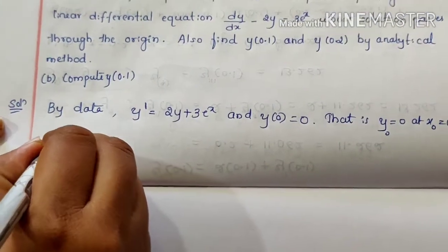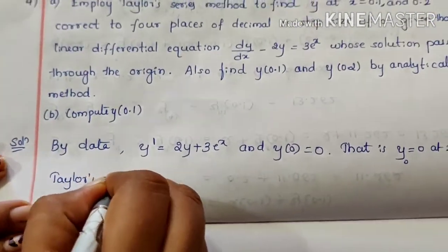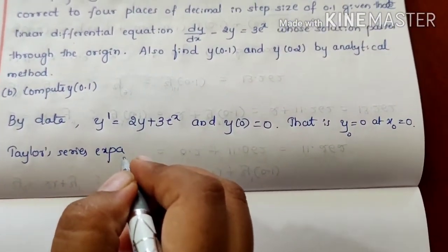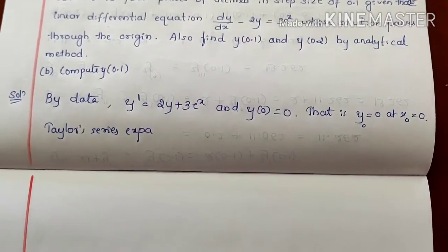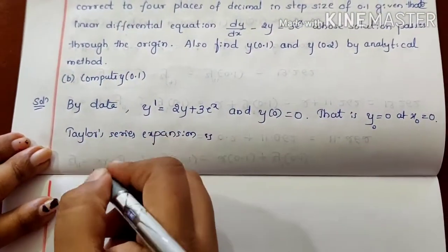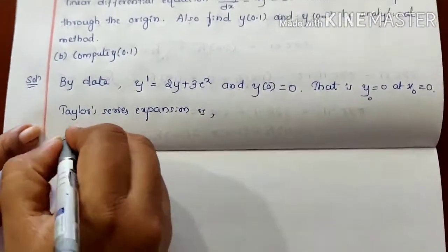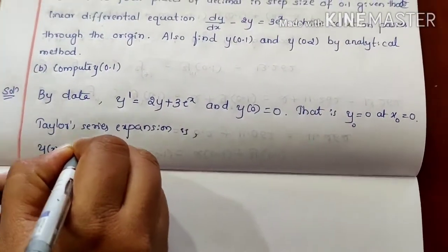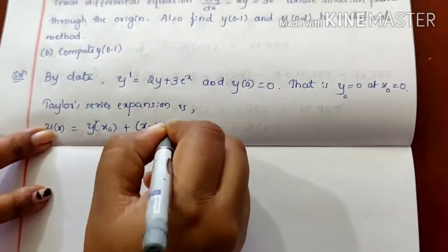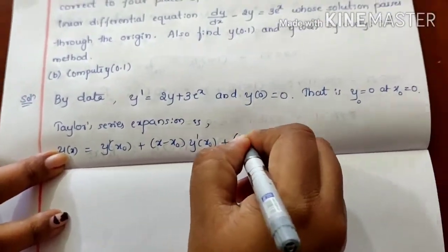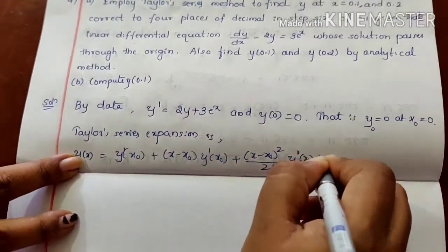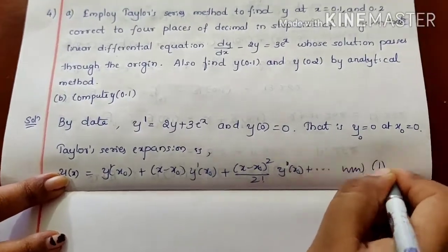Write down the Taylor series expansion. y(x) is equal to y(x₀) plus (x minus x₀) into y dash of x₀ plus (x minus x₀) squared by 2 factorial into y double dash of x₀, and so on. Call this equation 1.